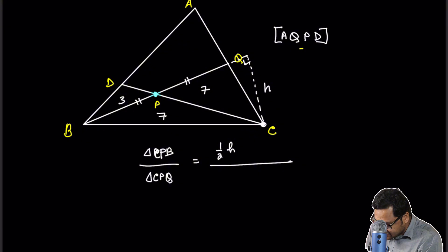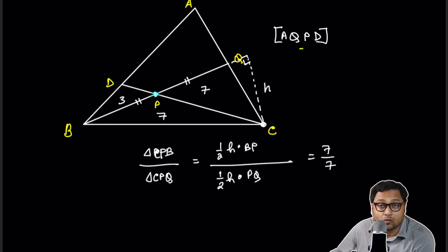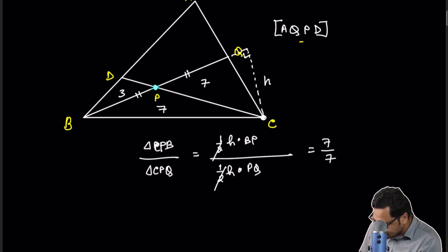If you calculate their areas, they have the same height and their bases are CP, the base is CPB, the base is BP and CPQ, the base is PQ. And that we know is 7 over 7. The areas are both 7. So half and half cancels, H and H cancels. So BP over PQ is 1 or BP is equal to PQ.